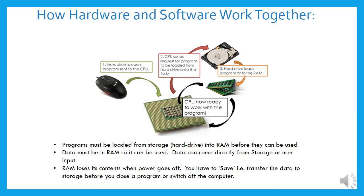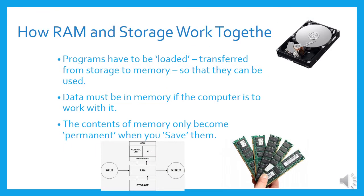Data must be in RAM so it can be used. Data can come directly from storage or user input. RAM loses its contents when power goes off, so you have to save. If you haven't saved a Word document or something you're busy with on your computer and the power goes down suddenly, you could lose everything. The contents of memory only become permanent when you save them.